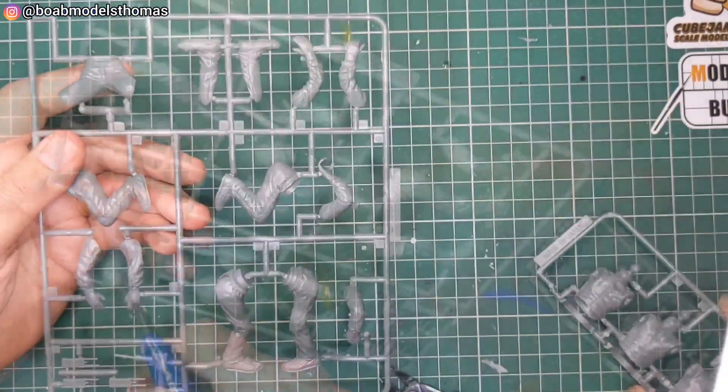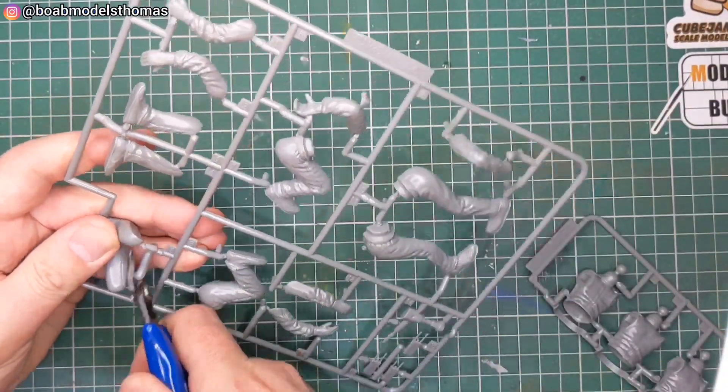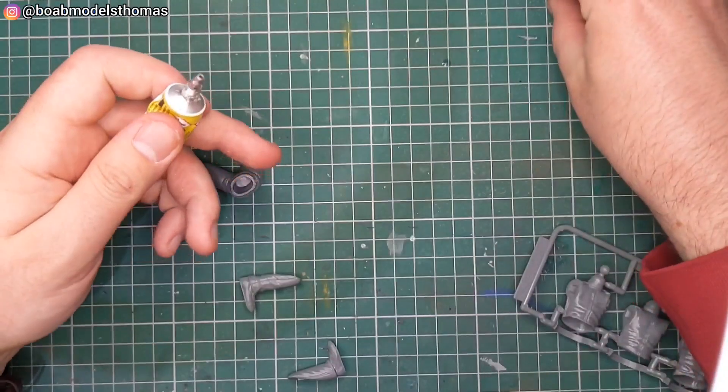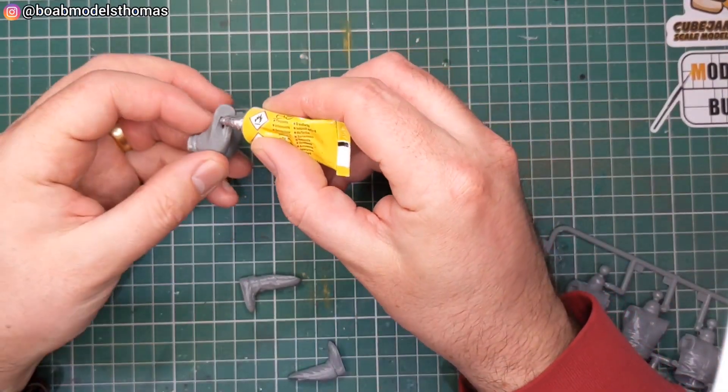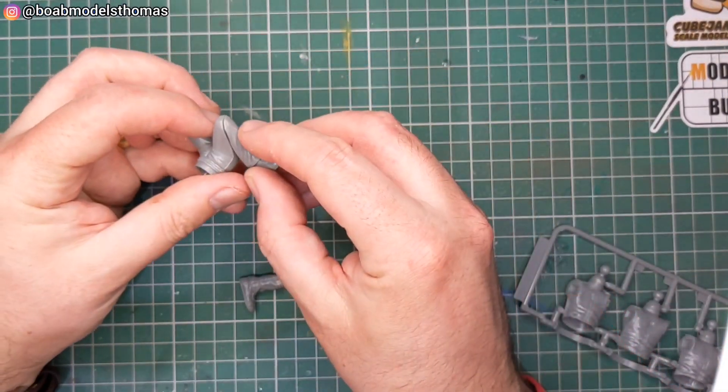Firstly you should see that there are a bunch of limbs on this sprue here and a bunch of torsos on the other one here. Read the instructions to fit them together in the right place.